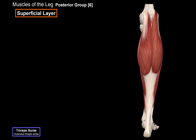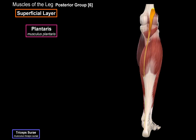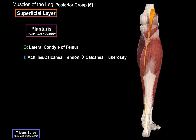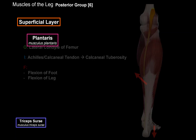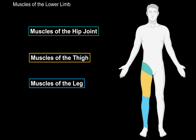Then we have the musculus plantaris. You can barely see it here, but if you fade the triceps surae, you can see it better. It originates from the lateral condyle of the femur, passes underneath the gastrocnemius muscles, and inserts at the Achilles tendon to then attach at the calcaneal tuberosity on the calcaneus. Its function is flexion of the foot and flexion of the leg. That was the superficial layer of the posterior group, and that covers all the muscles of the leg. In the next video, we will be covering the muscles of the foot.